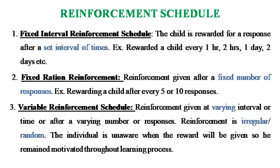The first is the fixed interval reinforcement schedule. In this schedule, the child is rewarded for a response made only after a set interval of time — for example, a child being rewarded after every 1 hour, 2 hours, 4 hours, 1 day, or 2 days, and so on. The second is the fixed ratio reinforcement schedule. In this schedule, reinforcement is given after a fixed number of responses — for example, a child being rewarded after answering every 5 questions or after every 10 questions.